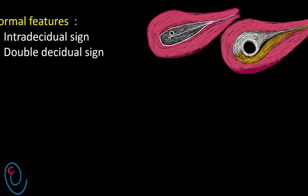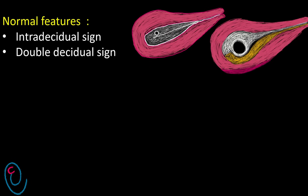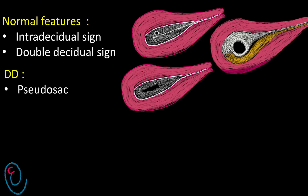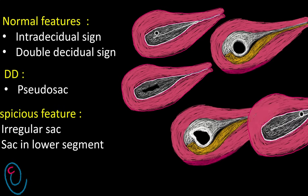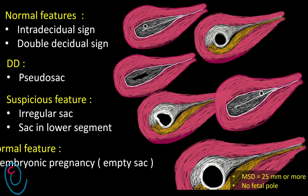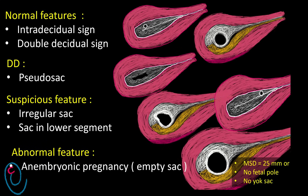To summarize: the normal features of the gestational sac are the intra-decidual and double-decidual signs. The differential diagnosis is a pseudo-sac. An irregular sac and a gestational sac present in the lower uterine segment are suspicious features requiring more frequent observations, while a mean sac diameter of 25 mm or more with no yolk sac or fetal pole is known as anembryonic pregnancy.